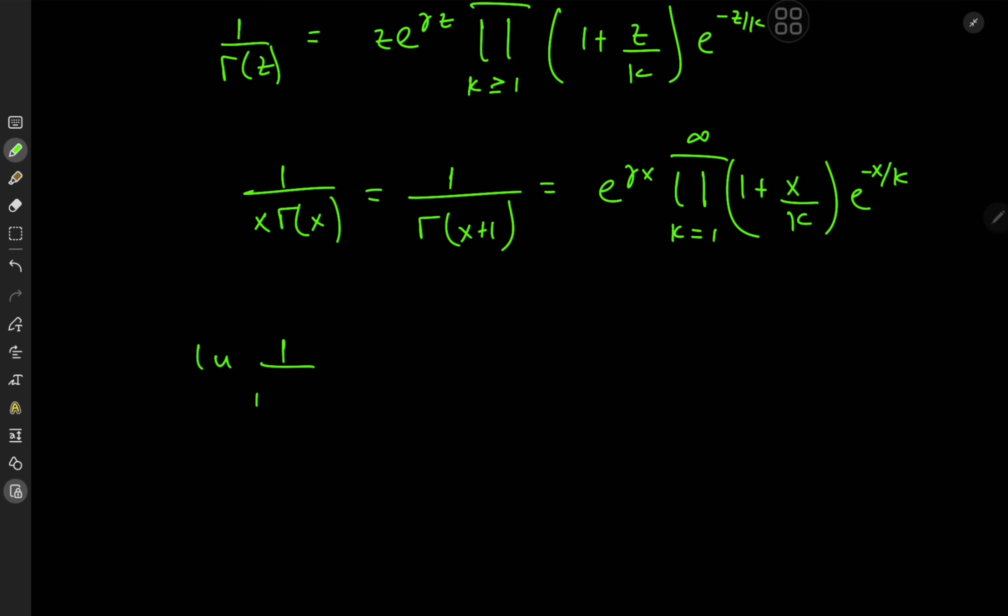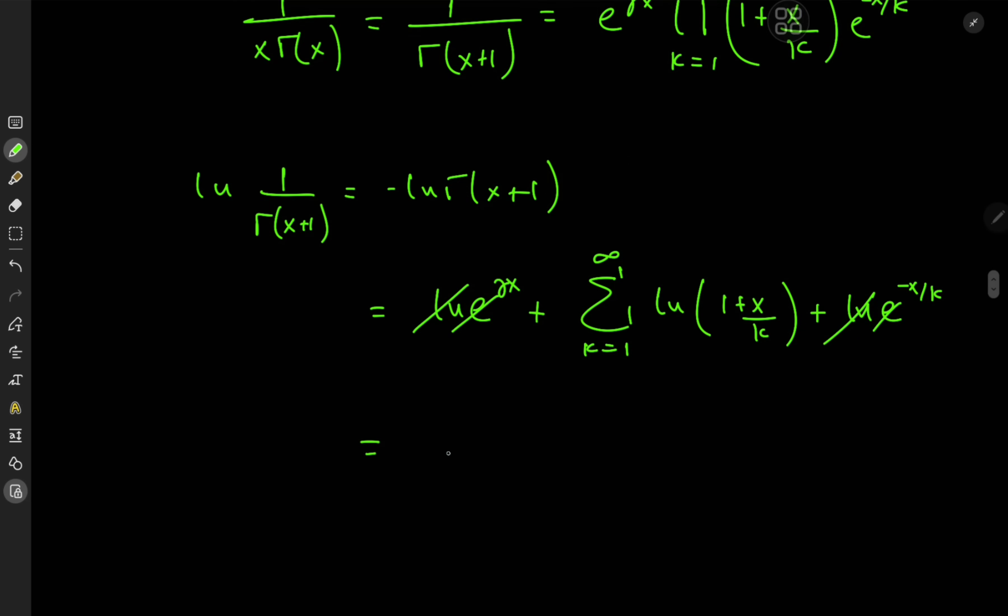So we have log 1 over gamma x plus 1 which equals negative log gamma x plus 1 and now applying the logarithm to the product we have on the right hand side, that means we have some interesting looking terms here. So we have log e to the gamma x plus this infinite product turns into an infinite series. So we have the sum over k from 1 to infinity of log 1 plus x over k plus of course we have log e to the negative x over k. Some lovely cancellation due to inverse functions, so that means we have gamma x plus the sum over k from 1 to infinity of log 1 plus x over k minus x over k.